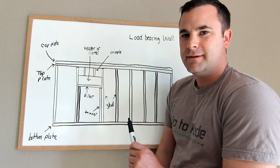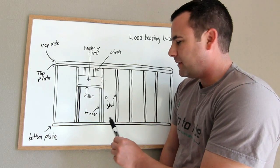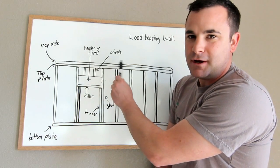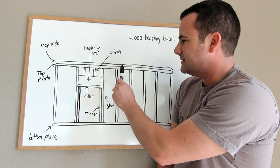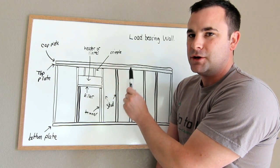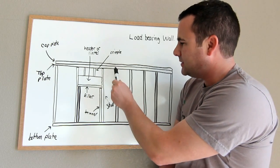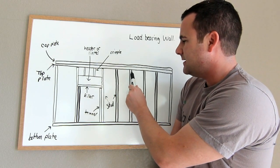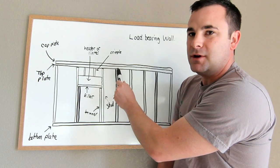In this scenario, this is a load bearing wall. The reason you have two top plates is because for a load bearing wall, unless your joists or your trusses land directly over top of the stud, you need the two top plates.